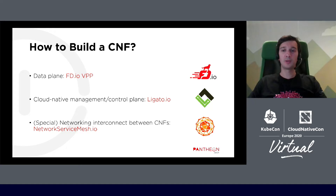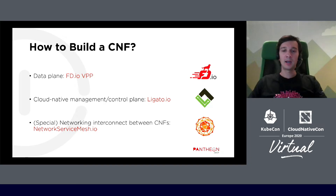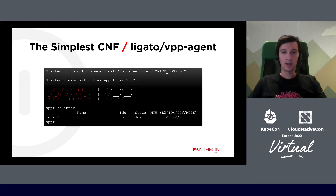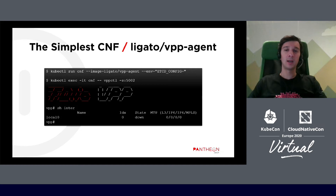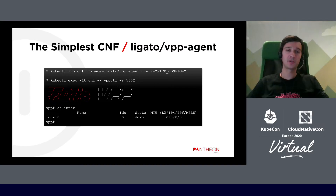And finally, we need to interconnect the CNFs with each other or with some external networking infrastructure, very often on lower networking layers than what we can get from the CNI plugins. For that, we can use the Network Service Mesh IO project. The simple CNF that you can run in Kubernetes is essentially the Ligato VPP agent docker image started in Kubernetes with a single kubectl command. It already contains the VPP data plane and the management plane for its configuration, but the data plane is not connected anywhere at this point, so it is not actually doing anything.